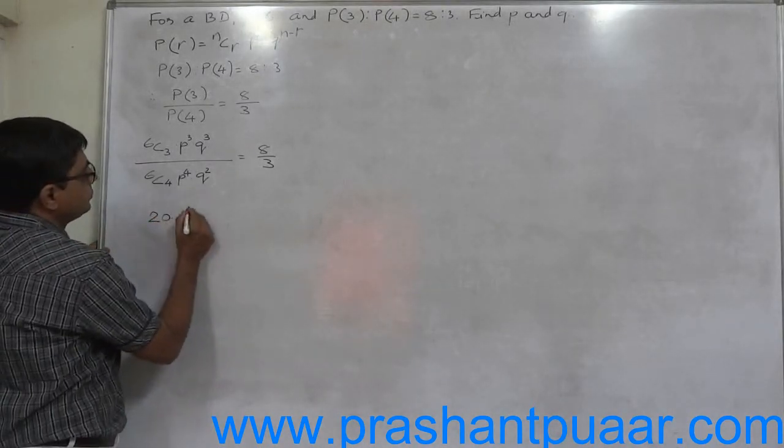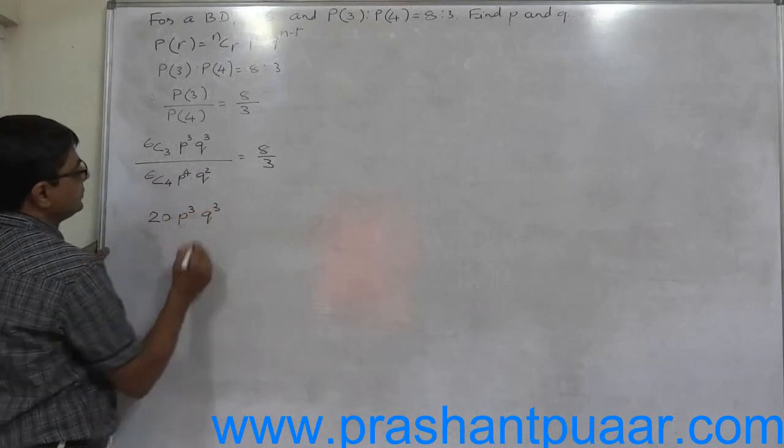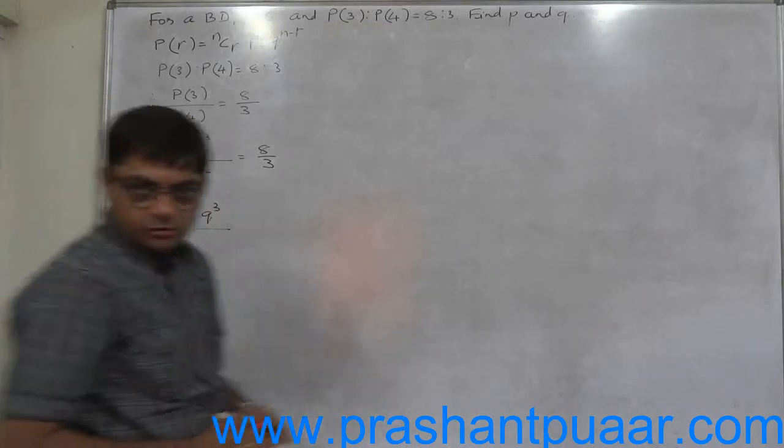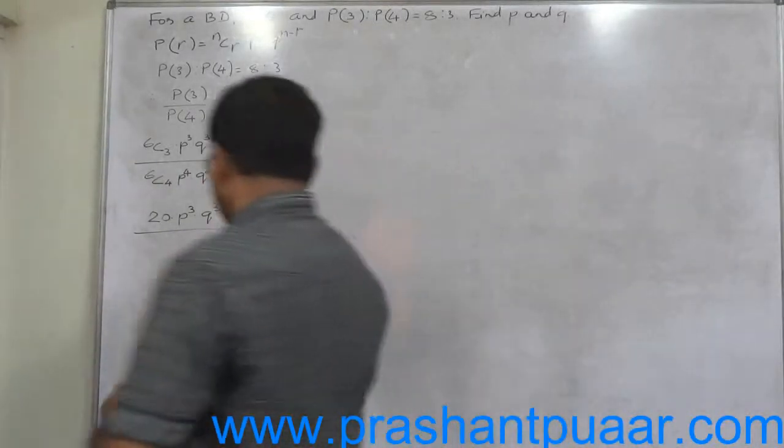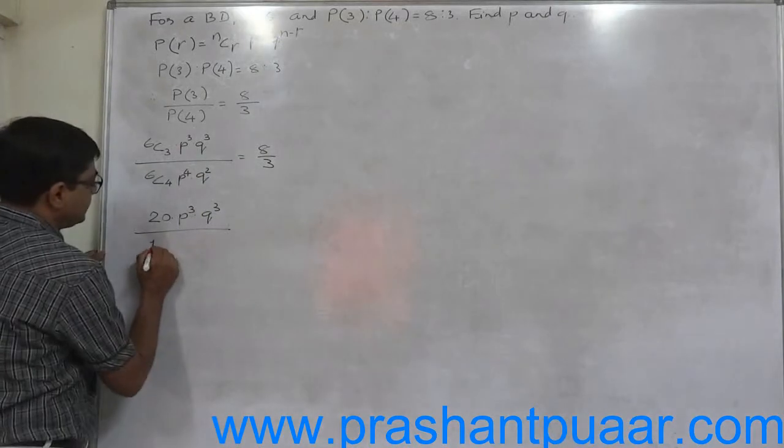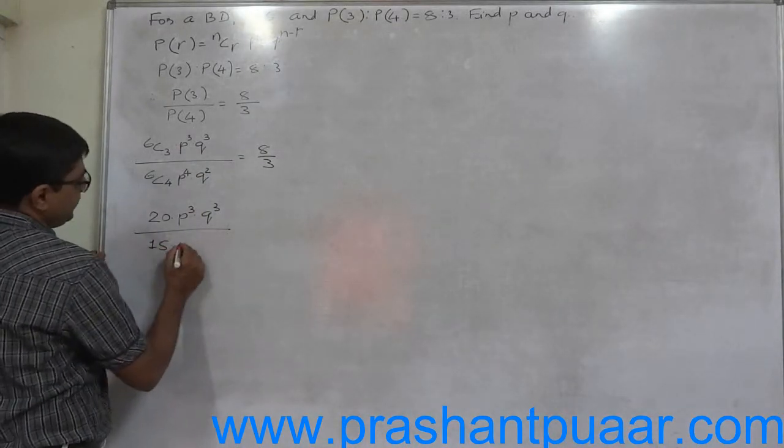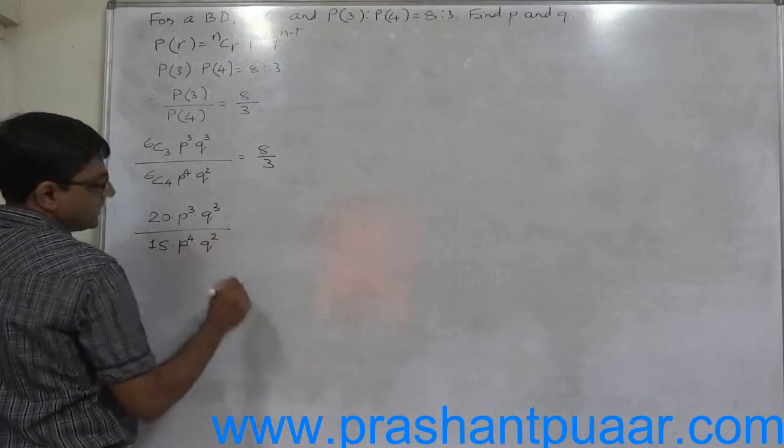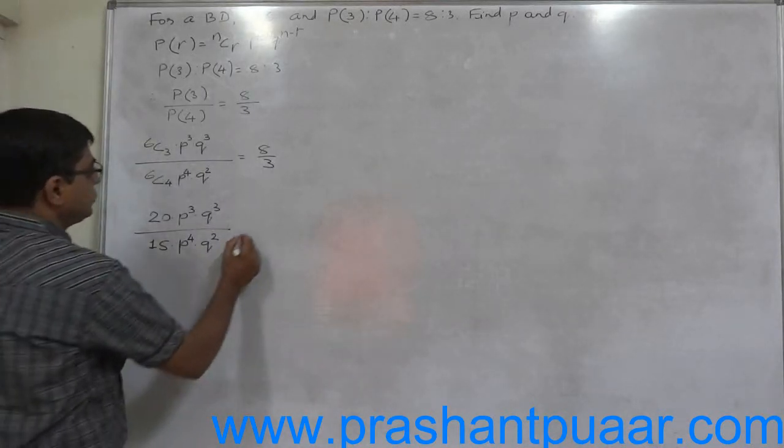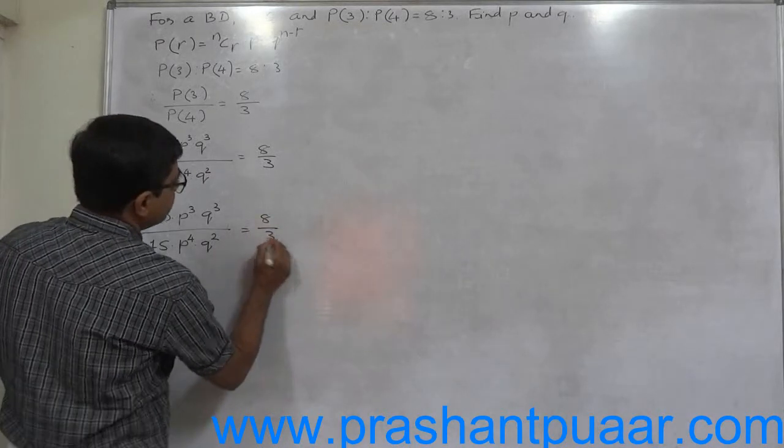Into P raise to 3 into Q raise to 3 upon 6C4 equals to 6C2. 6C2 means 6 into 5 divided by 2, so it must be 15 into P raise to 4 into Q raise to 6 minus 4, that is 2, equals to 8 by 3.